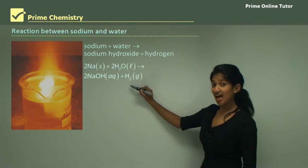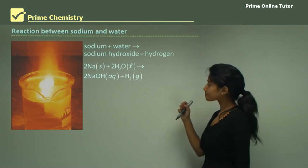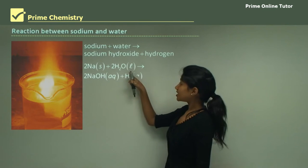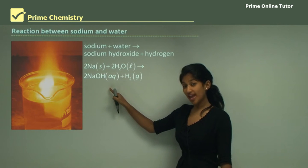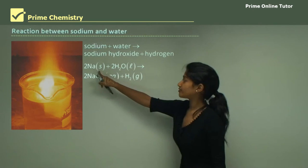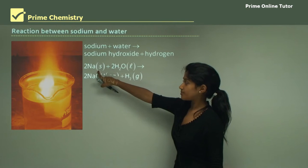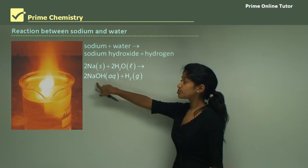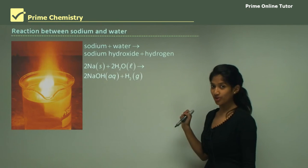Hydrogen gas is a diatomic particle, meaning it has two hydrogens bonded together. We've written all the states down: sodium is a solid, water is liquid, and the sodium hydroxide produced is in aqueous form. Hydrogen gas is a gas. You have to balance all your equations, so we have two sodium molecules reacting with two water molecules to produce two sodium hydroxide molecules along with one hydrogen gas molecule.